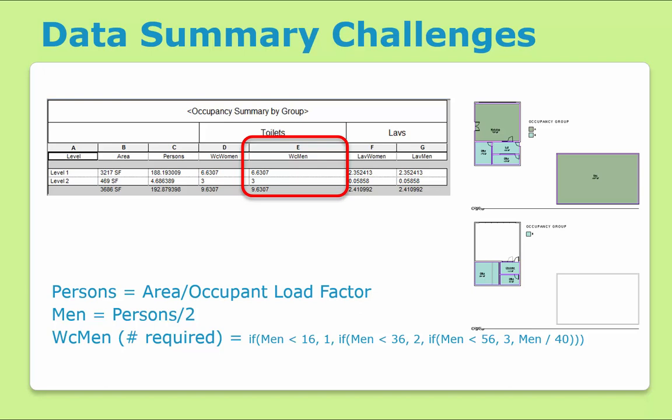In this simple example, we have two floors, each with a few rooms, though areas can also be used. The schedule is showing the subtotal values for occupancy for each level, and then conditional statements are used to determine how many plumbing fixtures are needed per each floor.